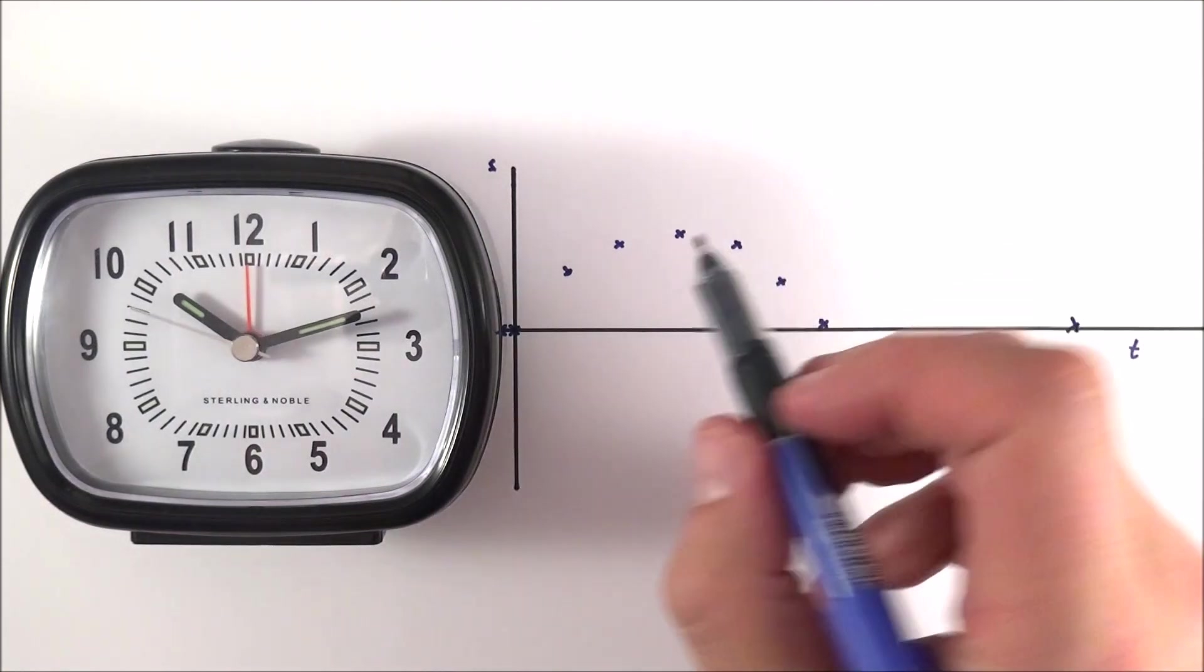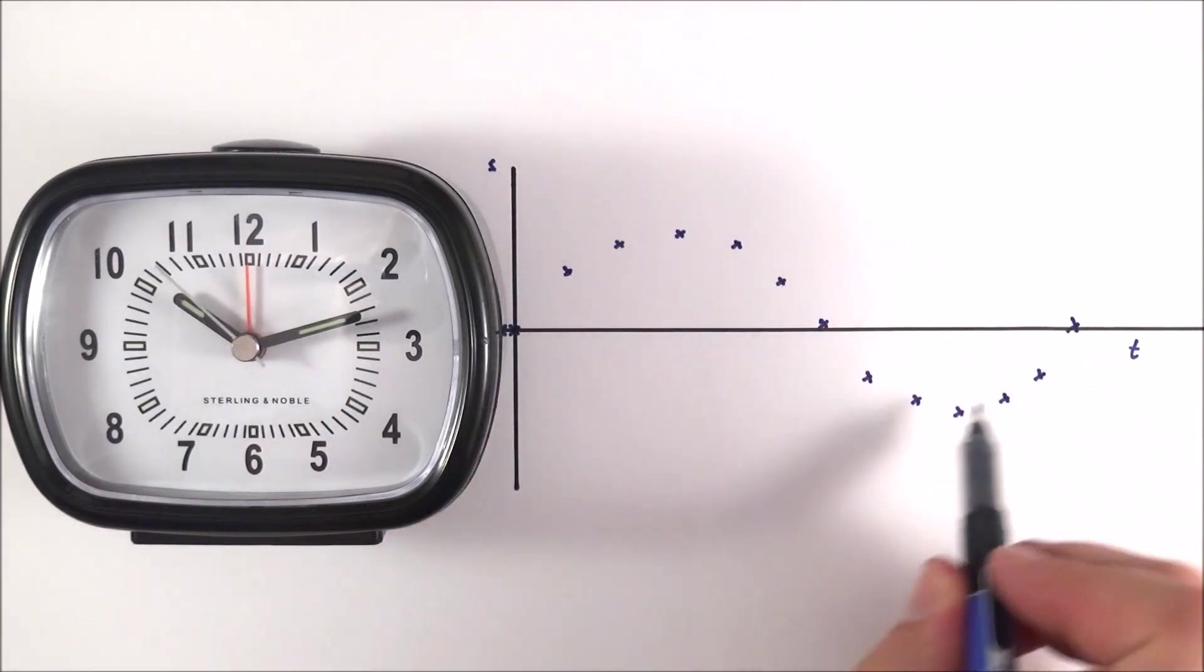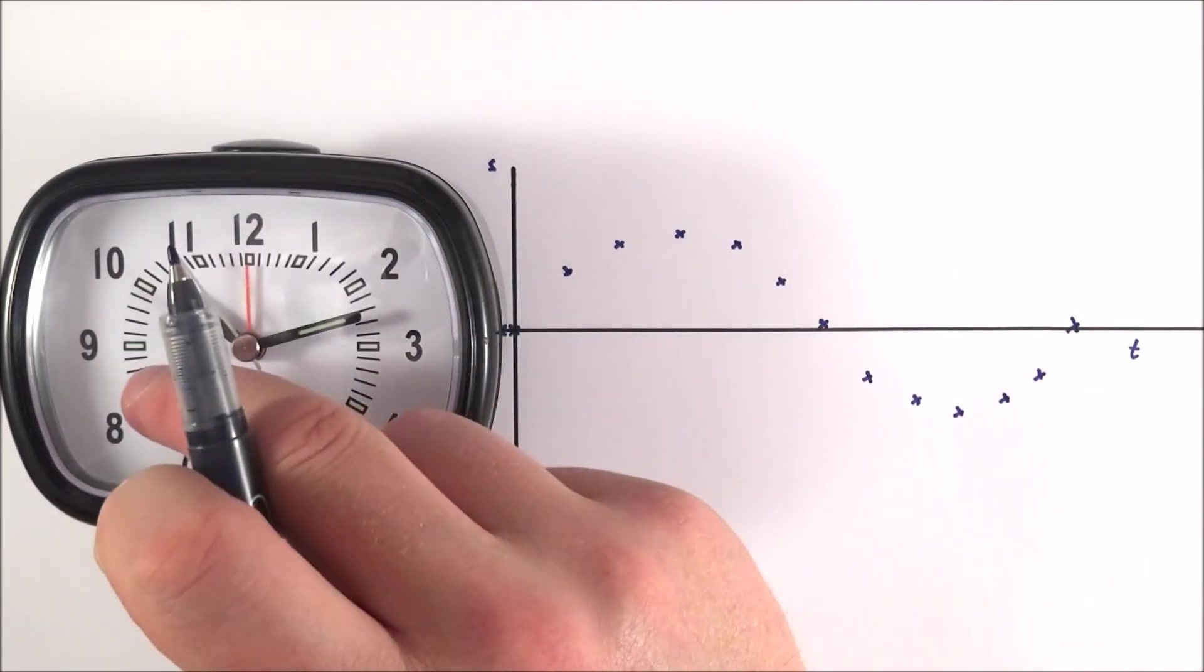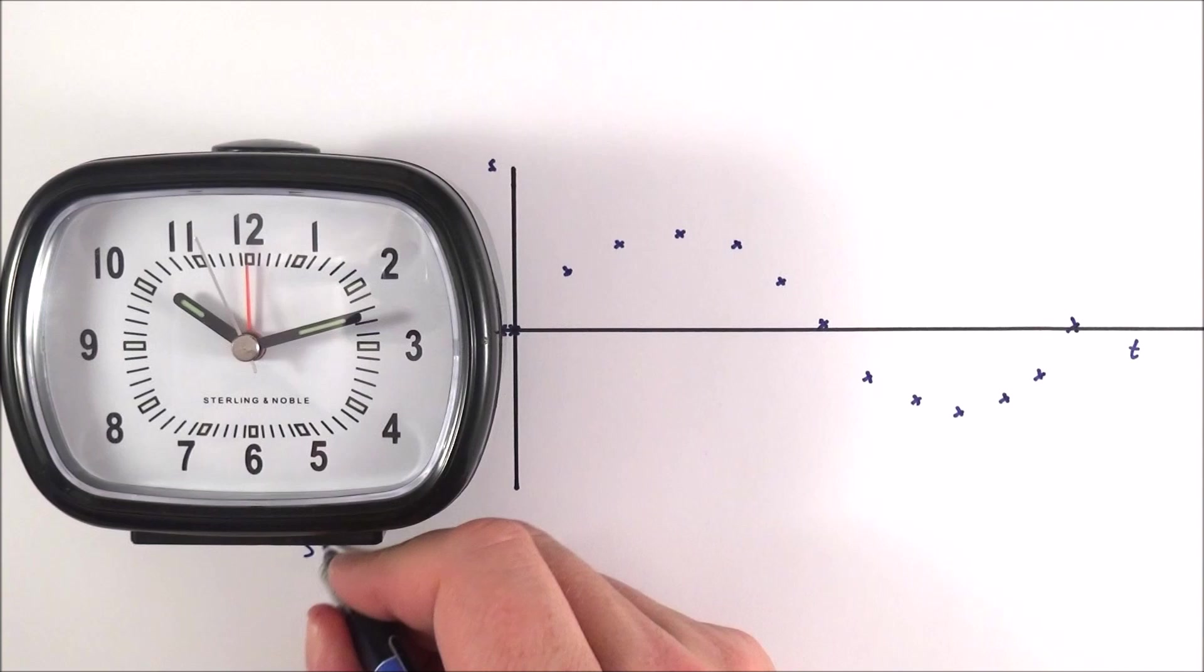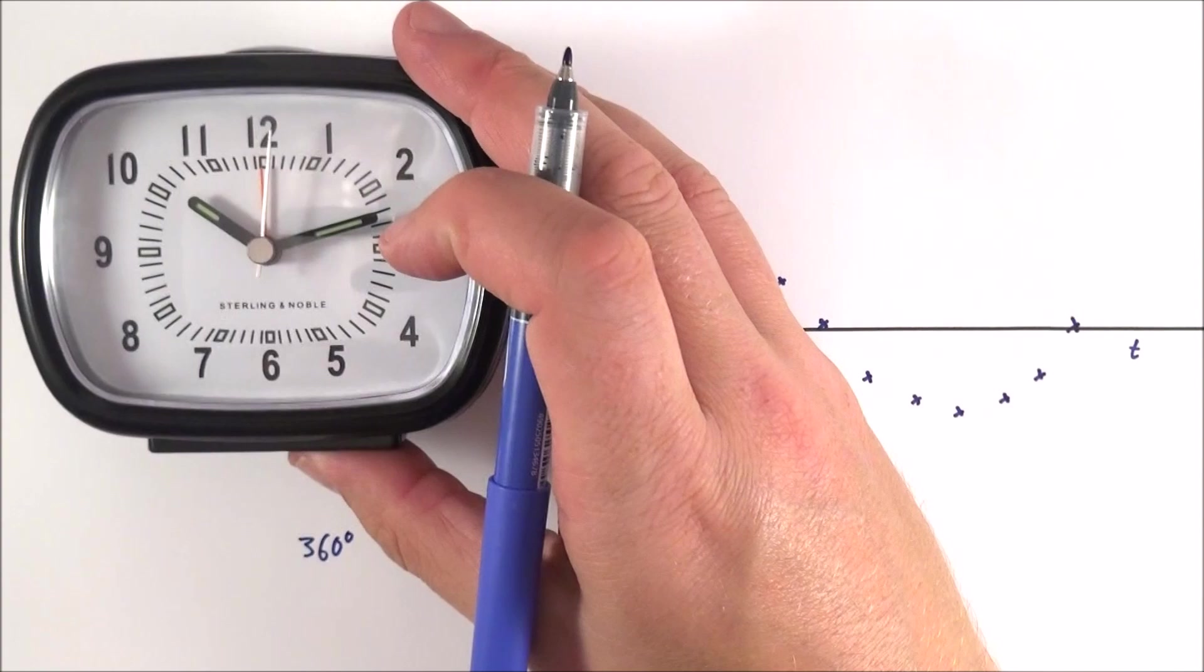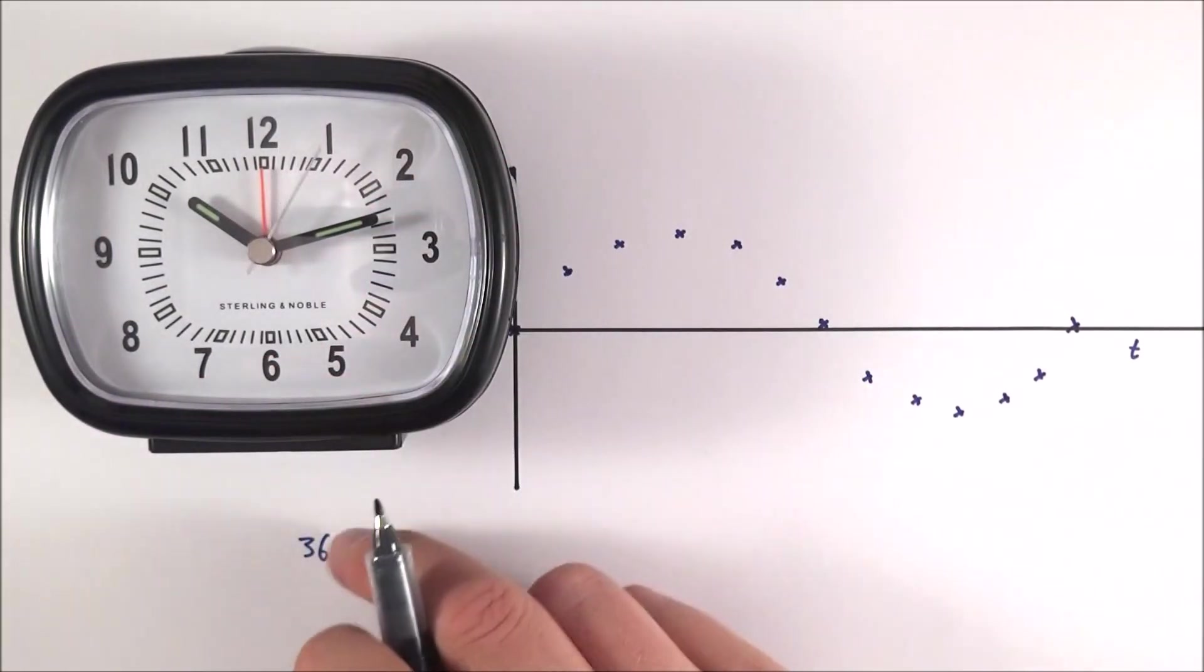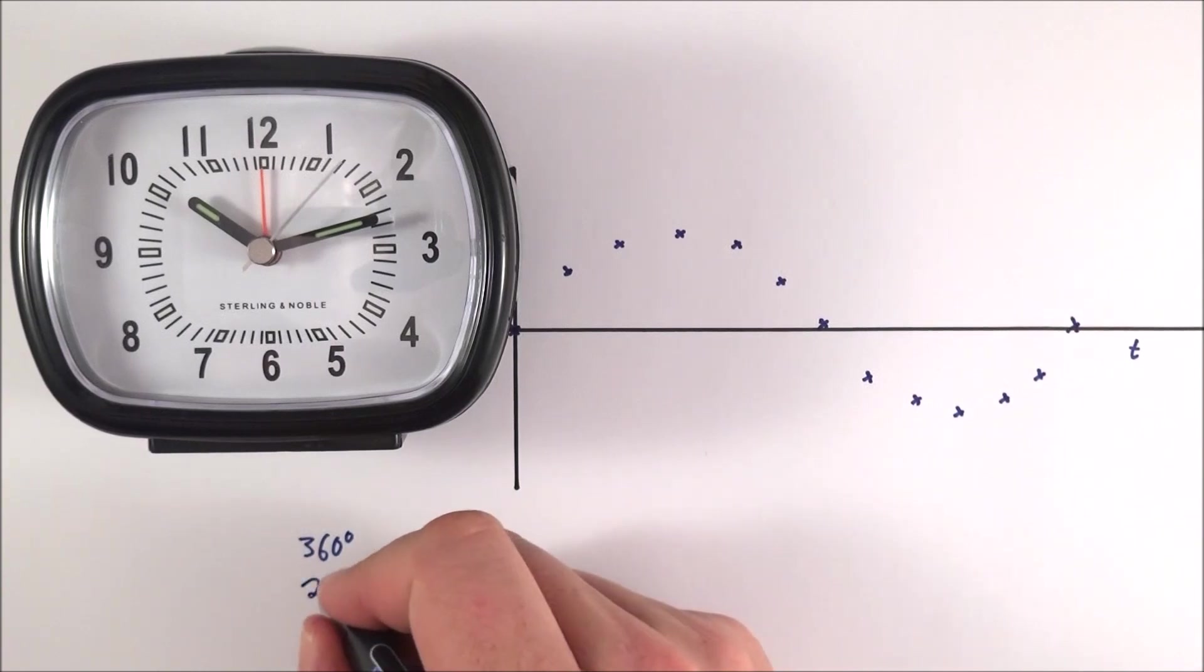Here we have the position of the end of that second hand over the course of one minute. In that time, this went through 360 degrees. If we think about what's more useful sometimes when it comes to physics, we can also think about this angle in radians, and 360 degrees is equal to 2π radians.